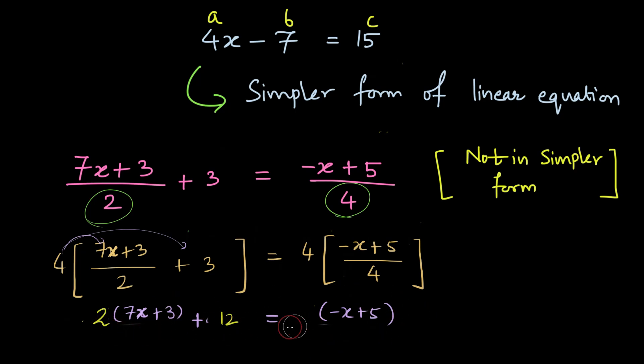So I am left with this interesting equation here which looks a little simpler than the original form and that is 2 times 7x plus 3 plus 12 is equal to minus x plus 5.